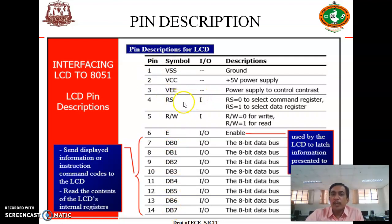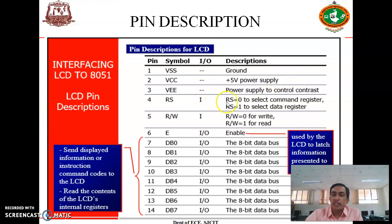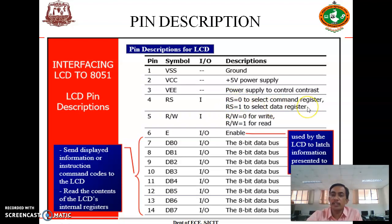To display any message on the LCD, we need to send commands first — to initialize the LCD, select a particular position, or turn on the LCD. For sending commands, RS must be 0 to select the command register. When sending data, RS must be 1 to select the data register, because the same pins are used to send both commands and data.